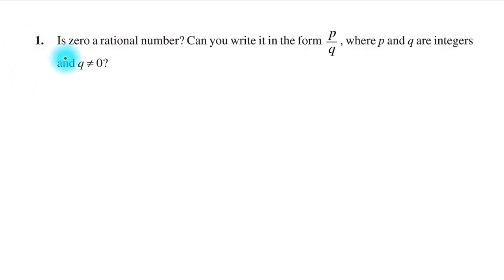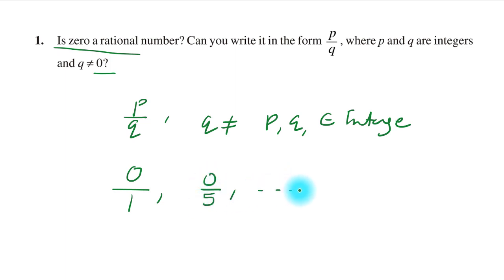First question: Is zero a rational number? Can you write it in the form p/q, where p and q are integers and q is not equal to zero? Rational numbers can be written as p/q, where q is not zero and p and q belong to the set of integers. Can we write zero in p/q form? Definitely. You can write zero as 0/1 or 0/5. You can put zero in the numerator and any non-zero integer in the denominator. Therefore, we can say that zero is a rational number.